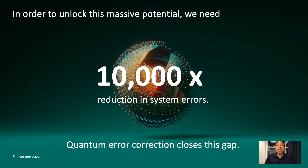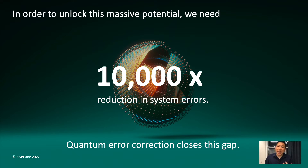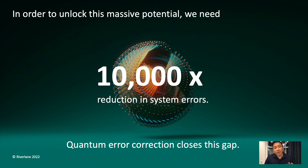But one big challenge standing in the way of this vision is how sensitive qubits are to being disturbed. As computations are running, things like noise from the environment and even from neighboring qubits cause errors and make the results of the computation incorrect and unusable. These errors put a ceiling on the size and complexity of the problem you can run through a quantum computer. Our estimates show that we need to reach about a 10,000x reduction in system errors to solve commercially valuable problems.